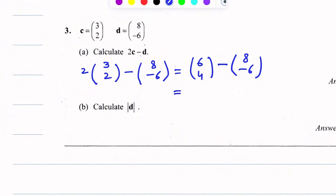This will become 6 minus 8, and 4 minus minus 6 becomes 4 plus 6. Simplifying this, we get 6 minus 8 which is -2, and 4 plus 6 which is 10.